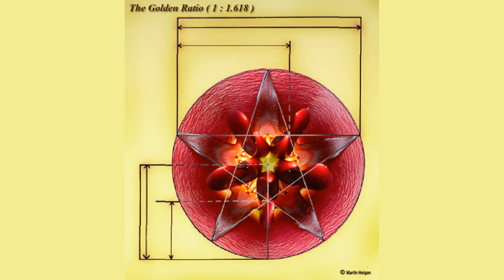The Golden Ratio has been used by artists and architects for centuries to create works that are visually pleasing and harmonious to the eye. It is often used to create a sense of balance and proportion. One of the most famous examples in art is Leonardo da Vinci's painting The Mona Lisa — the dimensions of the painting are said to be in perfect proportion to the Golden Ratio, creating a sense of balance and harmony that is still admired today.